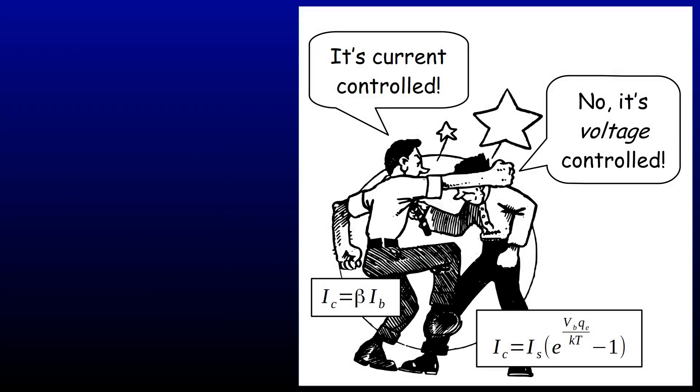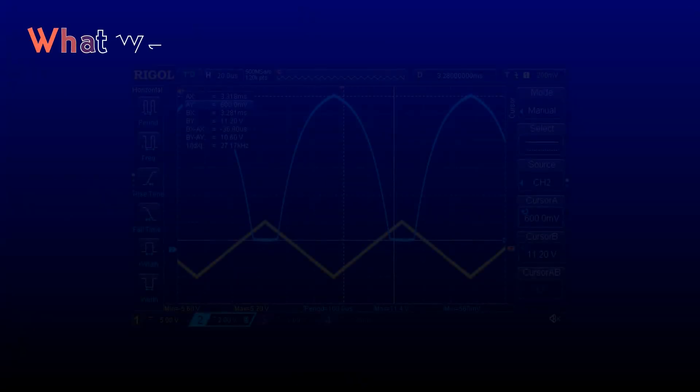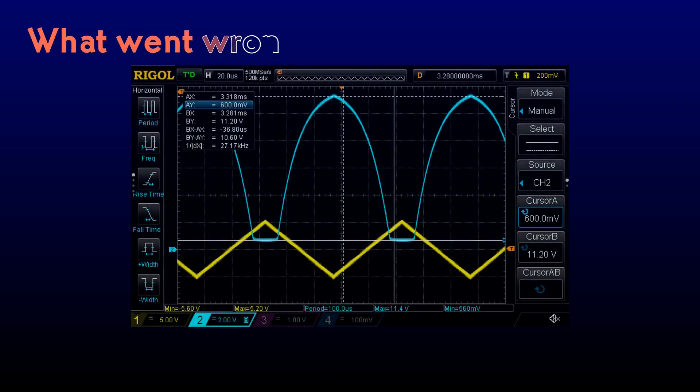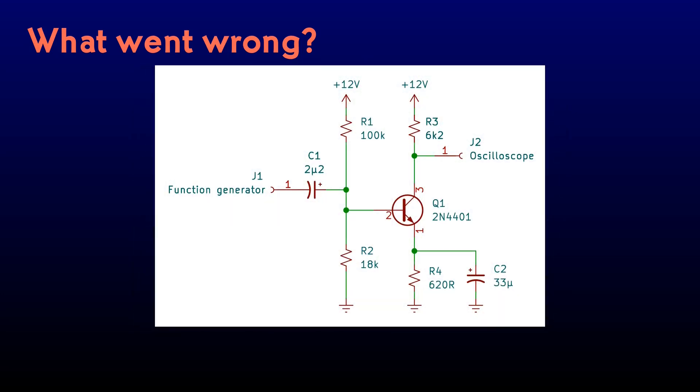Break it up, you guys! You can look at it as either voltage-controlled or current-controlled. It depends on what you need. But if using beta works so well, what went wrong with our attempt at a high-gain amplifier? We understand why the negative peaks clipped. But what's with the rest of the distortion?